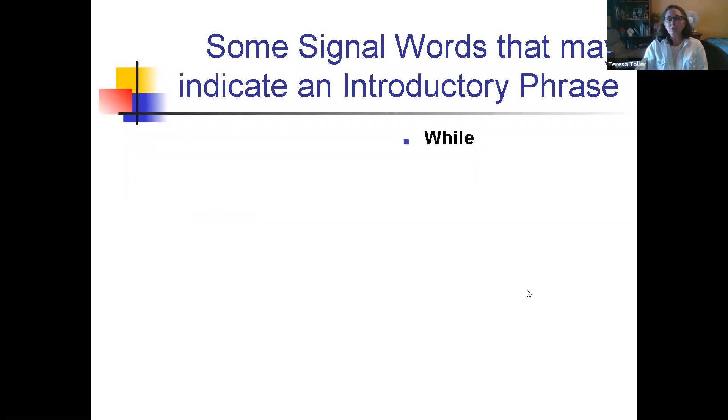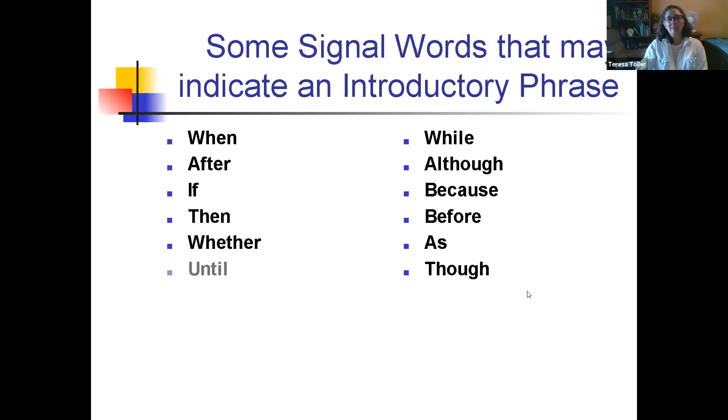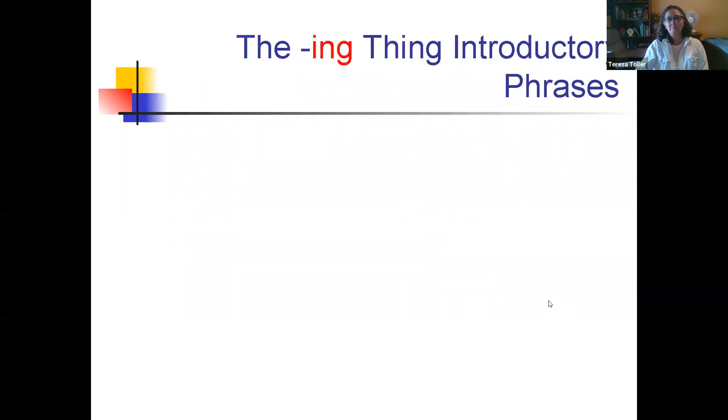Some of the signal words: while, although, and I'm not going to read all of these out loud to you. But all of those words are very commonly used when you are starting a sentence with an introductory phrase. Words ending in -ing also can signal an introductory phrase.